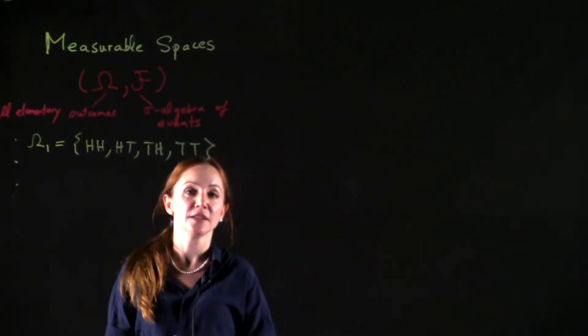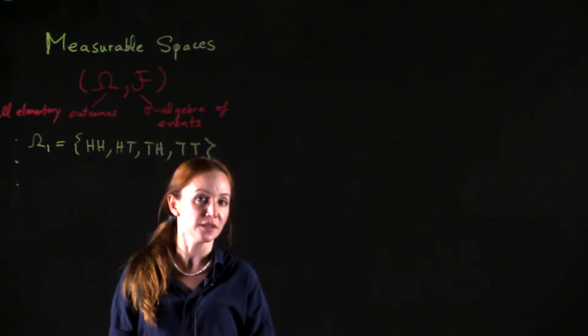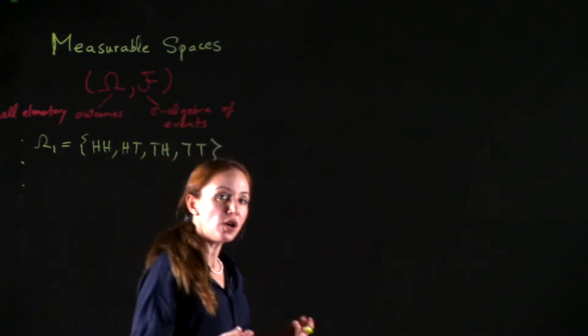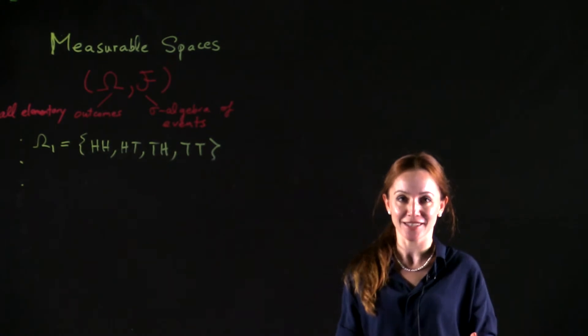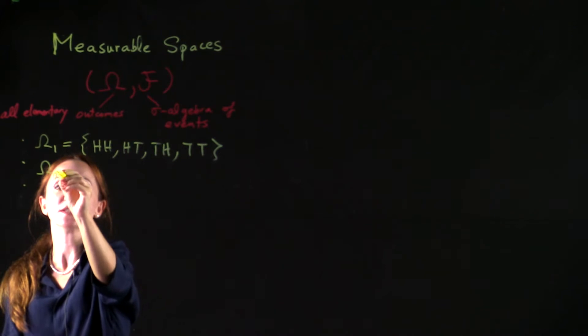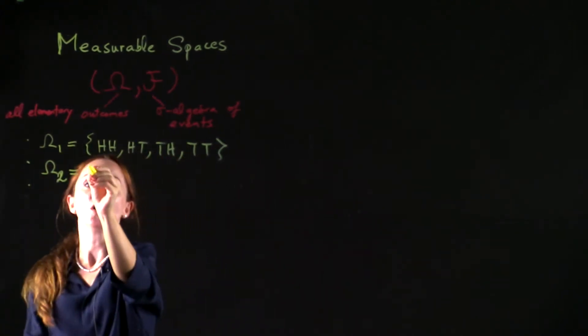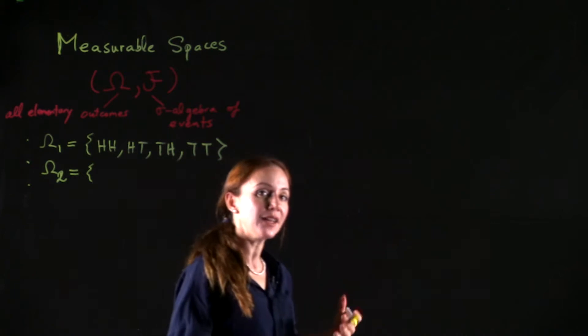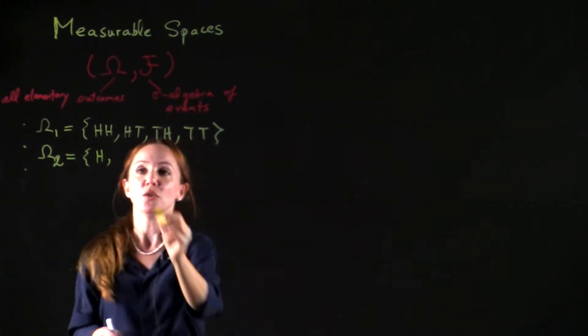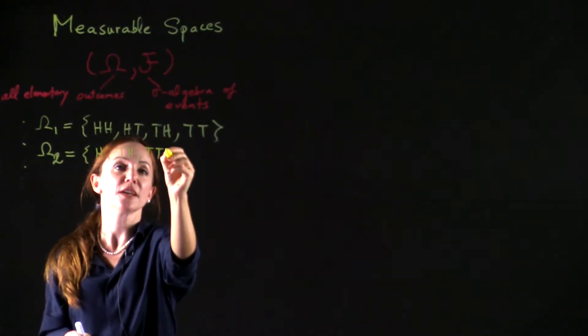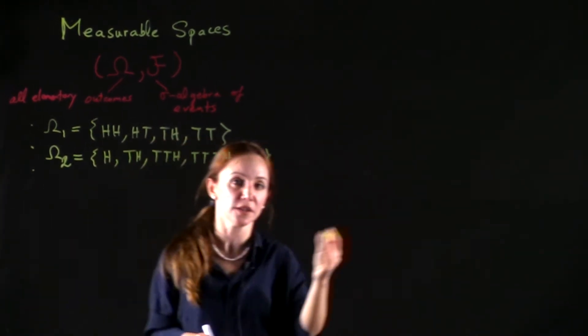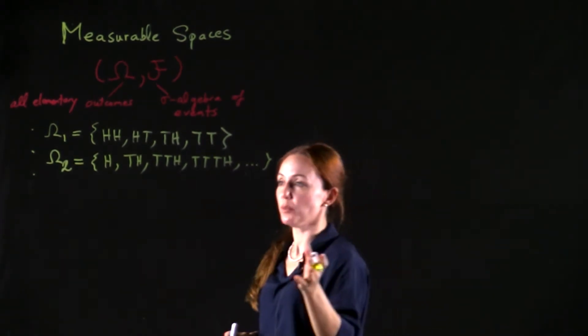In some experiments, the sample space is not finite, but has a countable infinite number of outcomes. For example, think of tossing a coin until we get heads. In that case, the sample space, let's call it omega 2, will be sequences that end in heads. It could be heads and then stop, or tails heads, or tails tails heads, tails tails tails heads, and so on indefinitely. This is a countable infinite sample space.